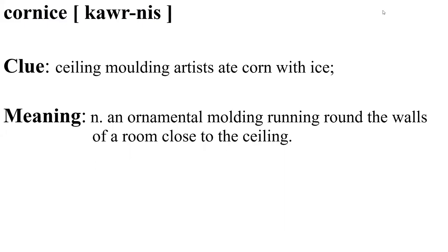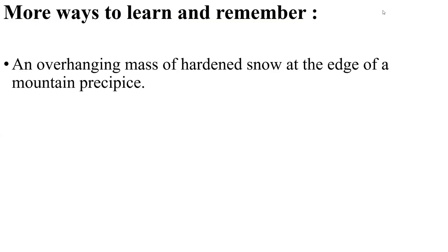Cornice. Clue: ceiling molding artists ate corn with ice. Cornice means an ornamental molding running around the walls of a room close to the ceiling. It also means an overhanging mass of hardened snow at the edge of a mountain.